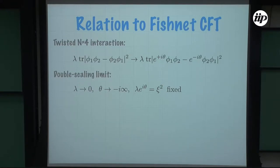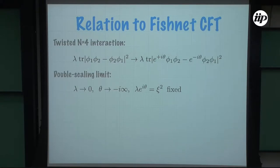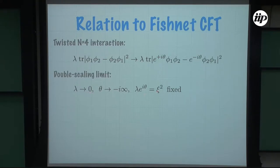One way to think about the twisting — and it's probably not totally correct — in principle we have to do this TsT thing and get something really ugly. But another way of thinking is that it's like an open string which is closed modulo a global symmetry rotation. You open your string and look for solutions such that after rotation it becomes closed, so at least classically they're equivalent. You keep the same background, just an open string, and make it periodic modulo the global rotation.